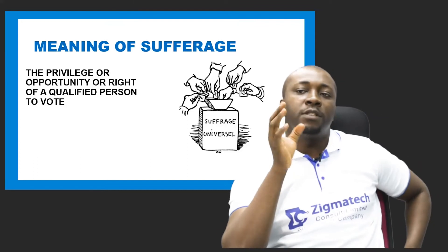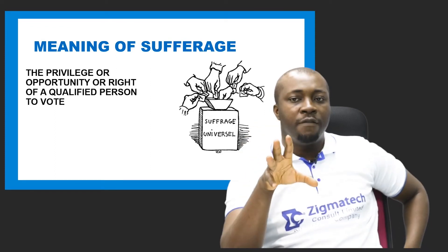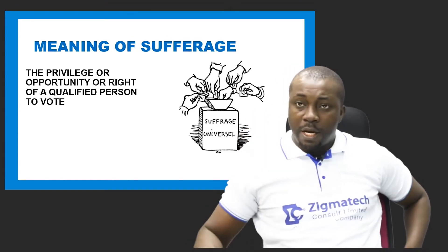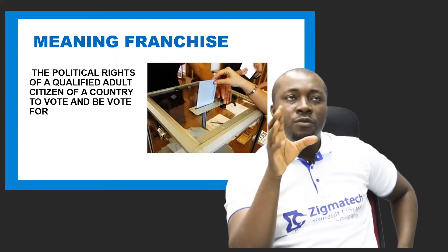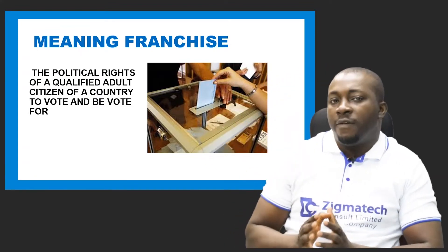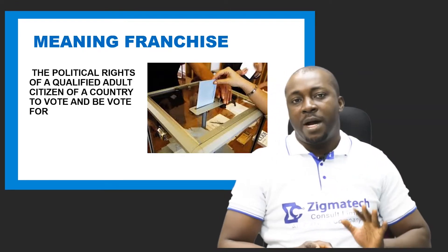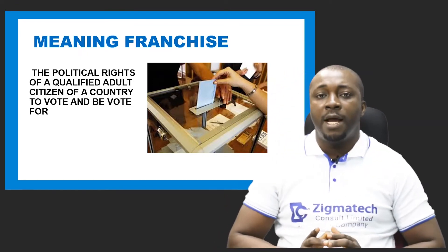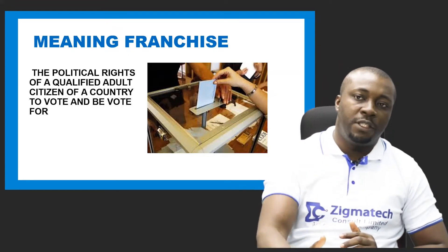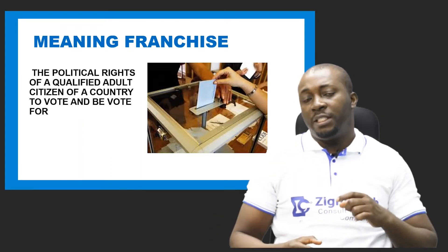Now let's look at the concept of suffrage. Suffrage is simply the privilege, opportunity, or right of a qualified person or citizen to vote in an election — it is simply the right to vote. A related concept used interchangeably with suffrage is franchise. Franchise is the political right of a qualified adult citizen of a country to vote and be voted for. While suffrage is strictly about the right to vote, franchise is the right to vote and be voted for. Granting the right to vote and be voted for is called enfranchisement, while denial of that right is called disenfranchisement.